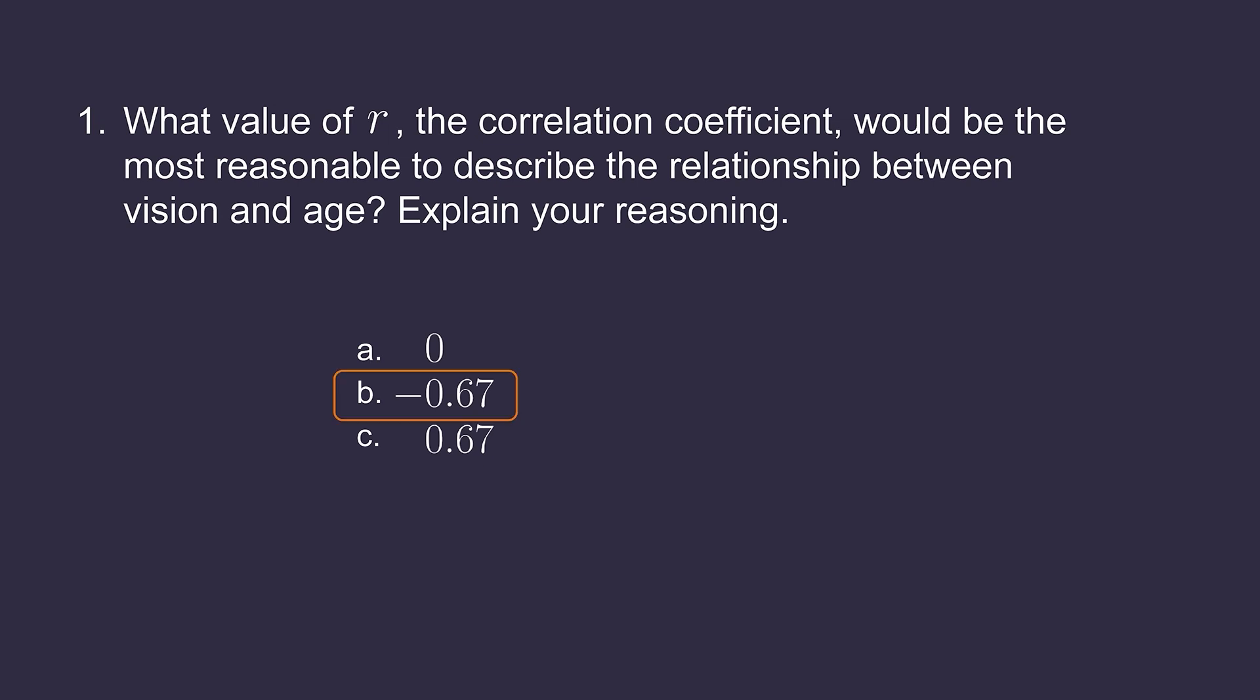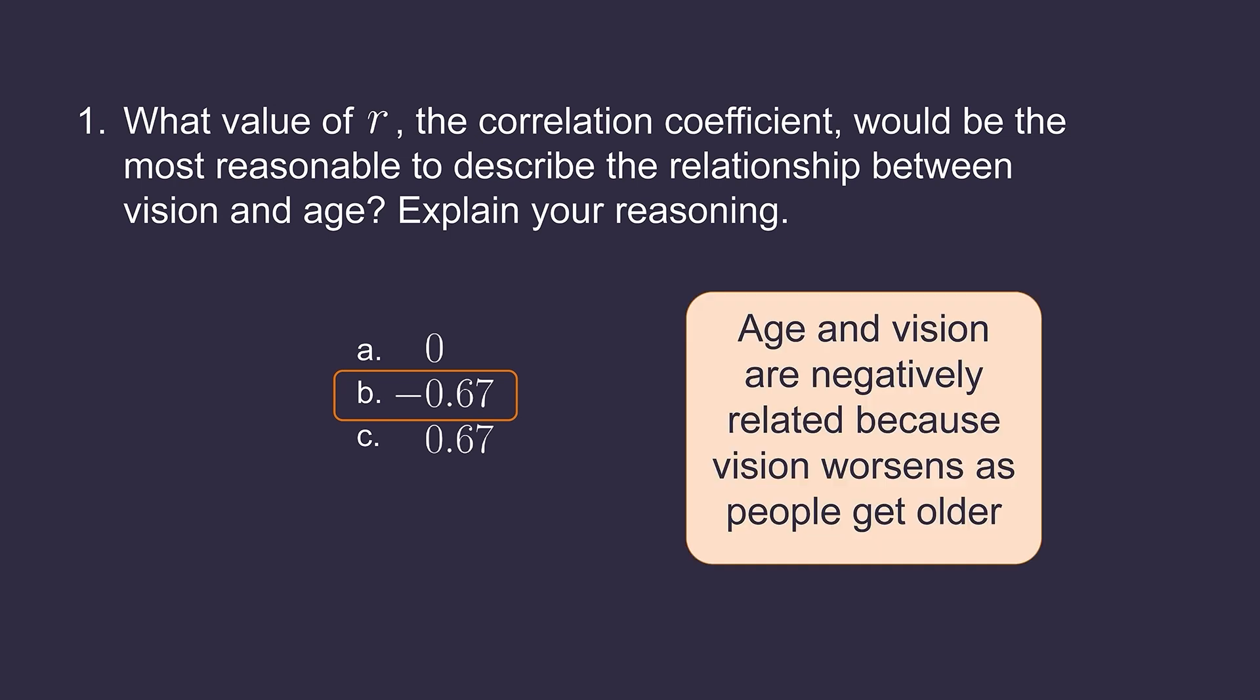Answer B will be the correct choice for question 1. We know that answer choice A is incorrect because we know that when people age, their vision tends to worsen, and an r value of 0 would indicate that there is no relationship between age and vision. Answer choice C is incorrect because an r value of 0.67 would indicate a positive relationship between age and vision.